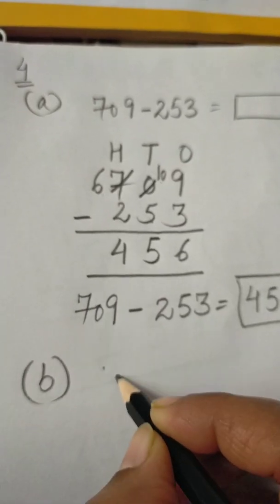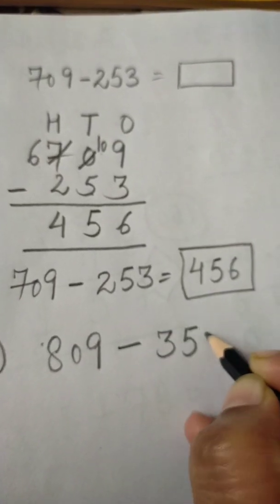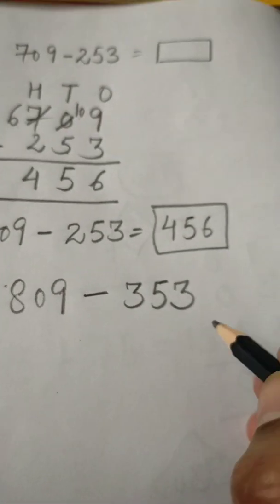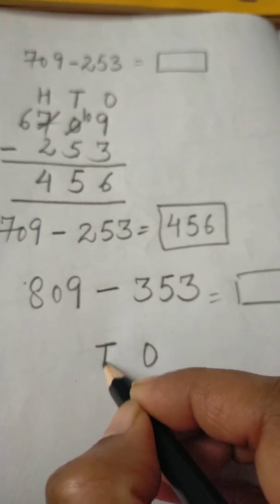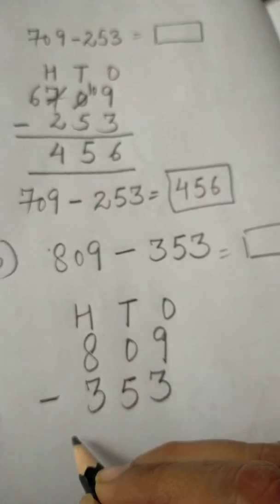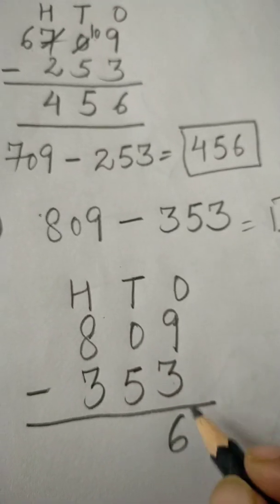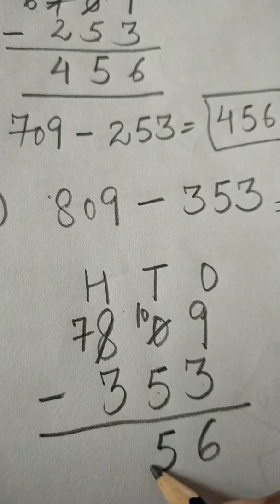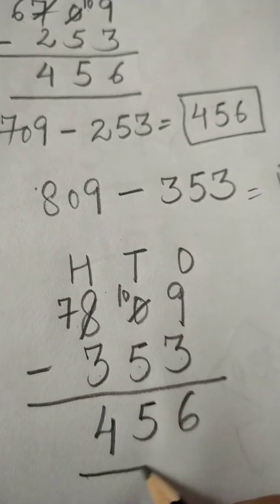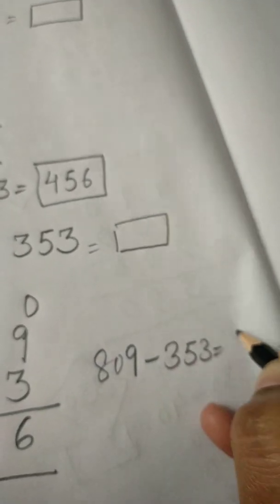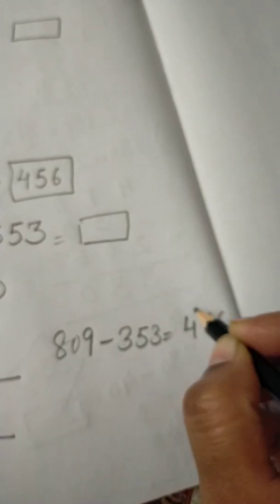Now b part: 809 minus 353. We do subtraction — ones, tens, hundreds: 809 and 353. 9 minus 3 is 6. 0 minus 5 is not possible, so we take one borrow from here — 10 minus 5 is 5. 7 minus 3 is 4. So we got 456. 809 minus 353 gives 456.